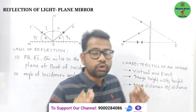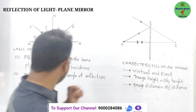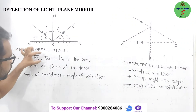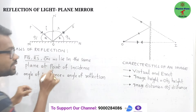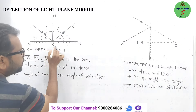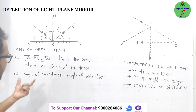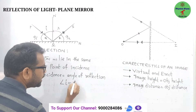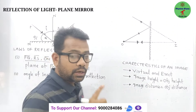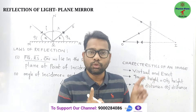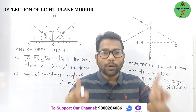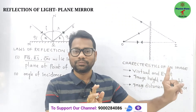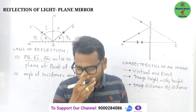There are two important laws of reflection. First: the incident ray, reflected ray, and normal all lie in the same plane at the point of incidence. Second: the angle of incidence is always equal to the angle of reflection, irrespective of the nature of the surface — whether smooth or rough — the laws of reflection always hold good.